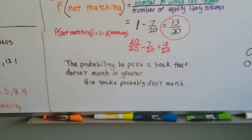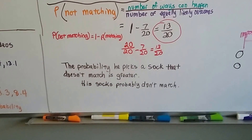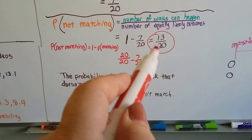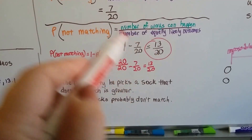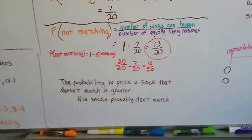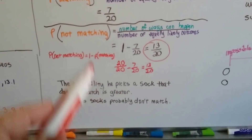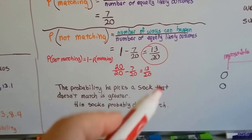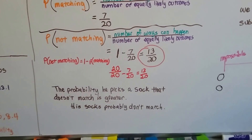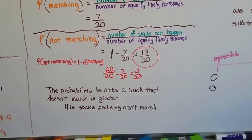So the probability he picks a sock that doesn't match is much greater — 13 out of 20 — than if it did match. Chances are his socks don't match.